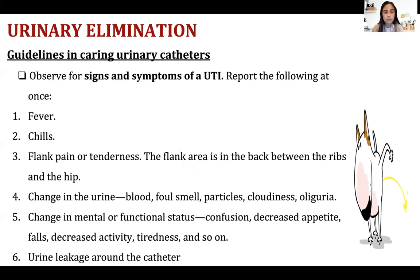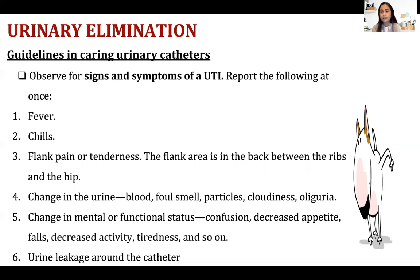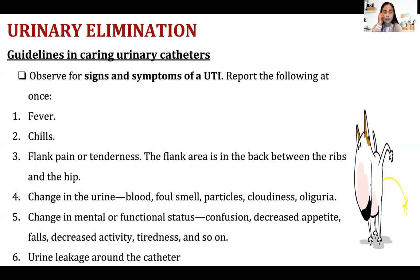Observe for signs and symptoms of UTI such as fever, chills, flank pain or tenderness — the flank is on the lower back. Watch for changes in urine: blood, foul smell, particles, cloudiness, and oliguria. Also watch for changes in mental or functional status: confusion, decreased appetite, falls, decreased activity, and tiredness. Always check for urine leakage around the catheter.